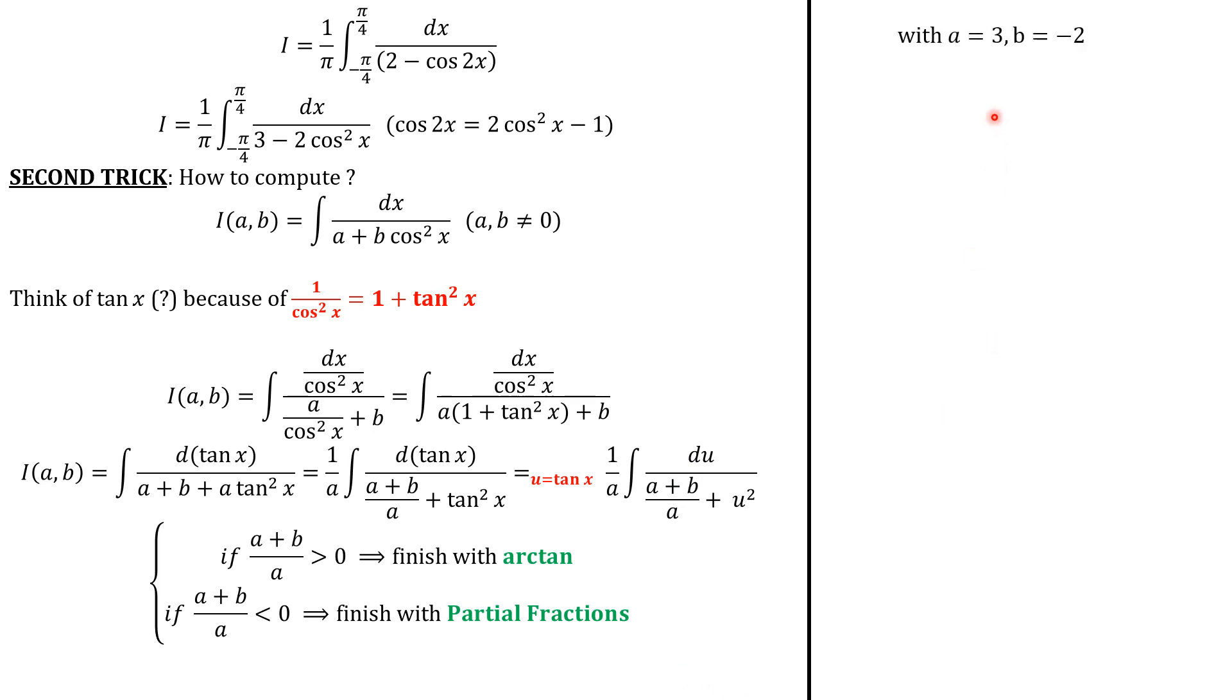But, in our case, we know that a equals 3 and b equals minus 2. So, applying this, I is this integral because tangent of pi over 4 is 1. And here, it's going to be minus 1. This function is an even function. So, I will write as 2 over 3 times pi this integral. And we know the antiderivative of this using the arctan function. And I just will write as follows because arctan of square root of 3 is just pi over 3.